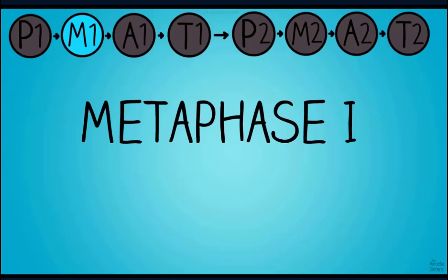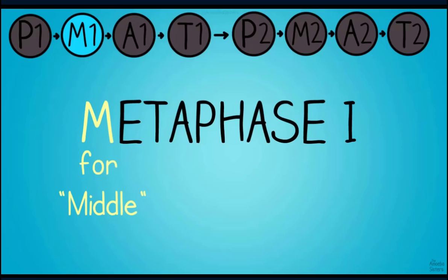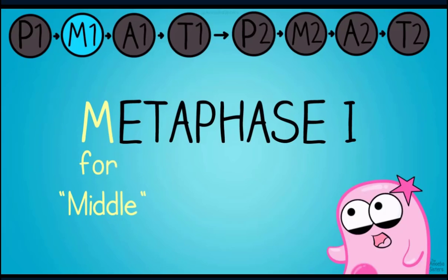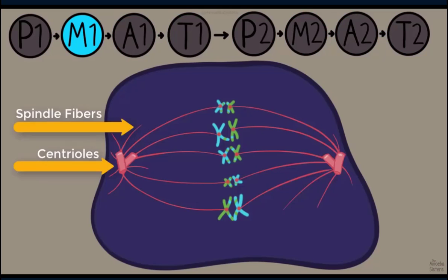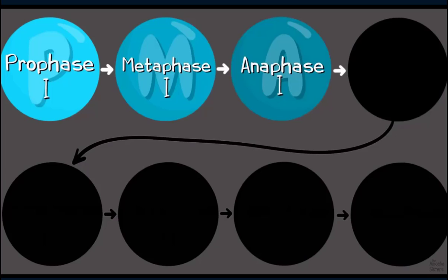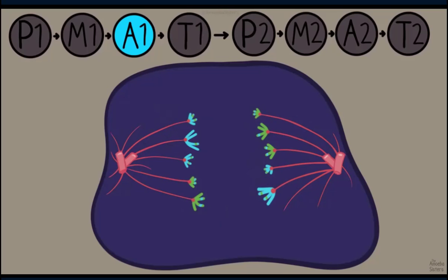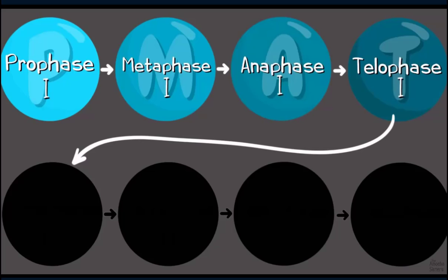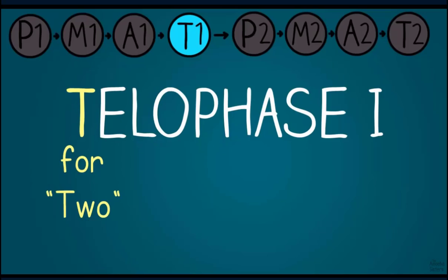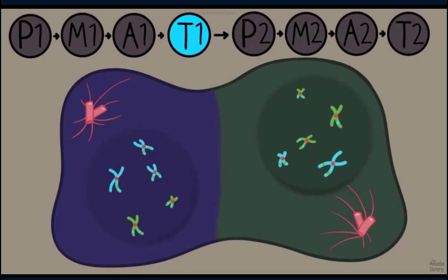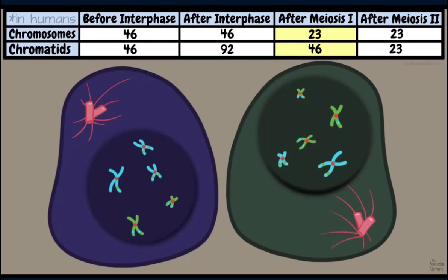In metaphase one, think of M for middle — the chromosomes are in the middle of the cell, but different from mitosis, they're in pairs in the middle, not a single file line. During anaphase one, think A for away — the chromosomes are pulled away by the spindle fibers. Then in telophase one, you have two newly formed nuclei, and it becomes clear you'll end meiosis one with two new cells. Cytokinesis follows, splitting the cytoplasm.